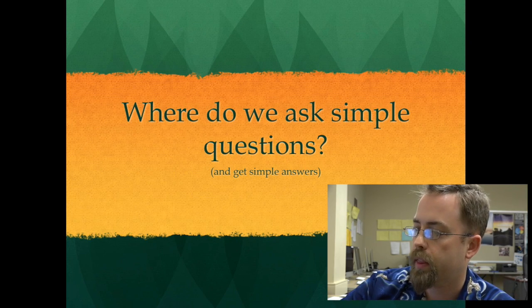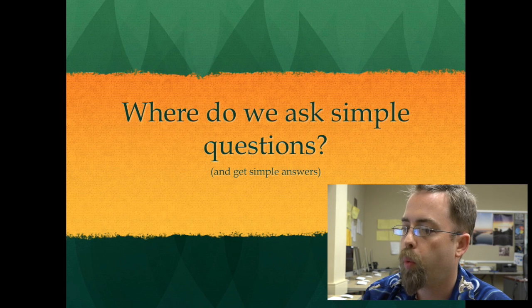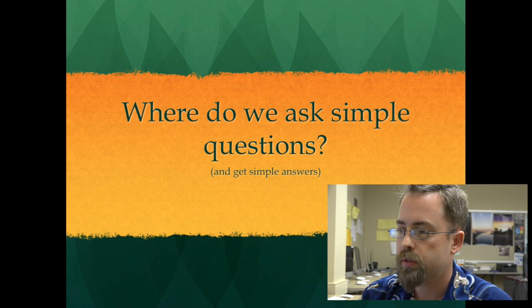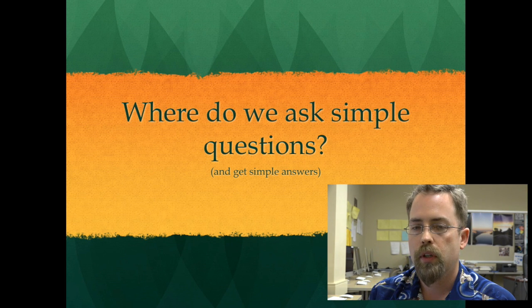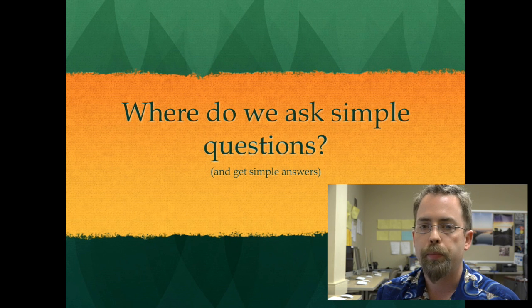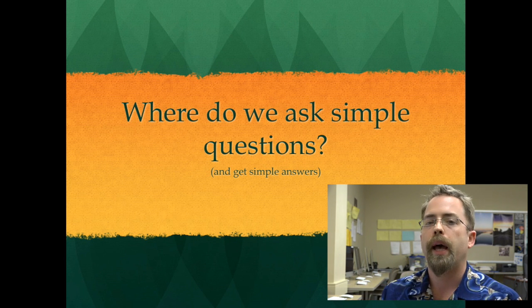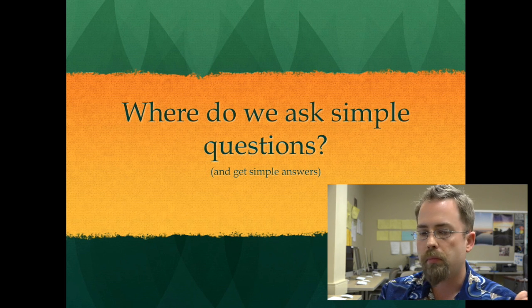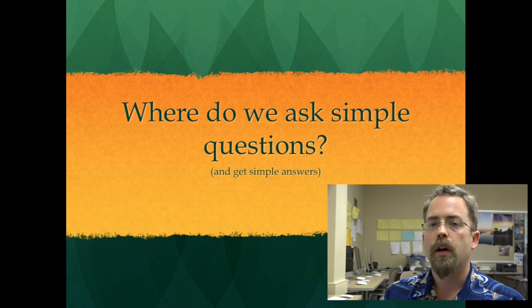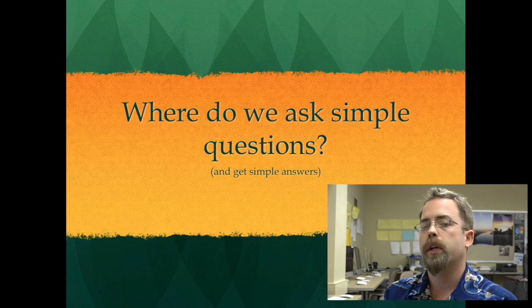We are starting off with the chapter one that says where do we ask simple questions and get simple answers. There are all kinds of things in the world that we expect to behave in a neat and orderly way where we ask it one question and get one answer back. And maybe you can think of some examples of procedures that you do one thing and expect one answer.